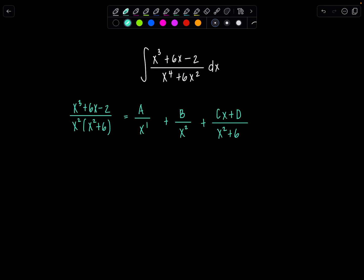Now we're going to solve for the constants A, B, C, D. So let's multiply through by the LCD, which is x squared, x squared plus 6.